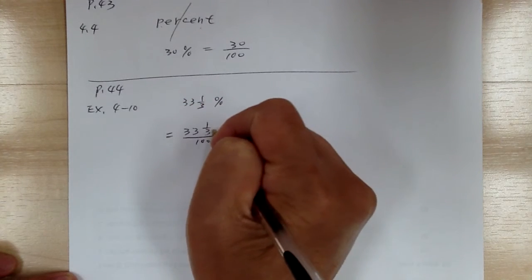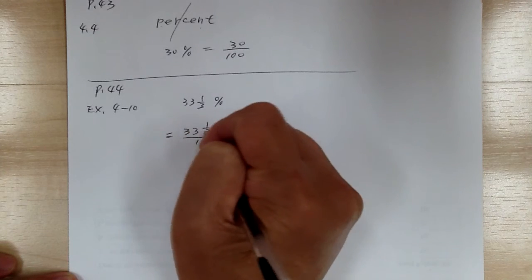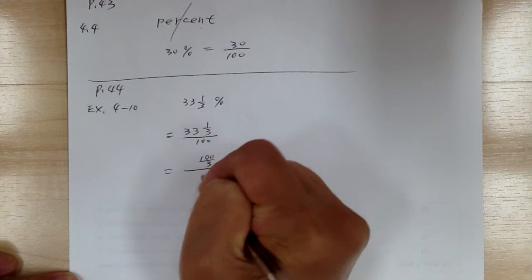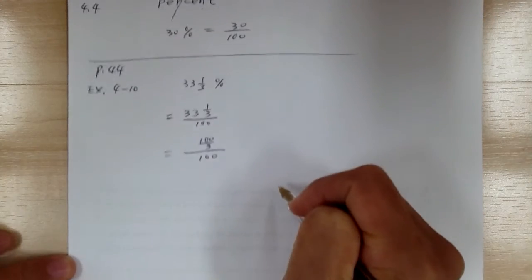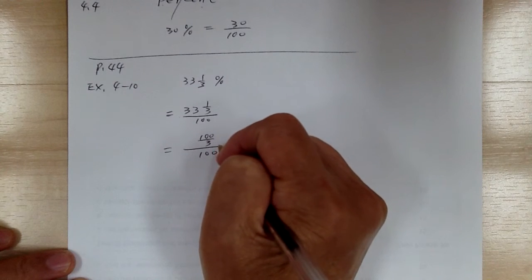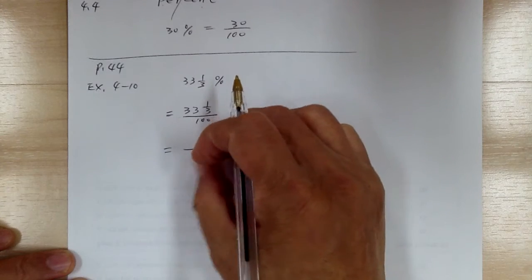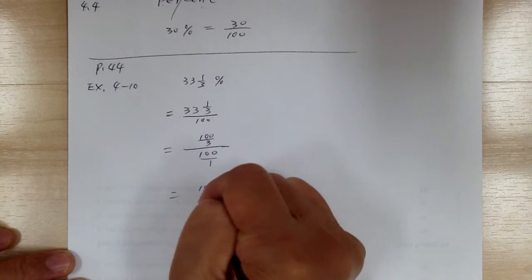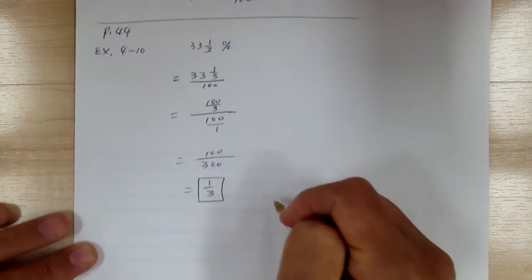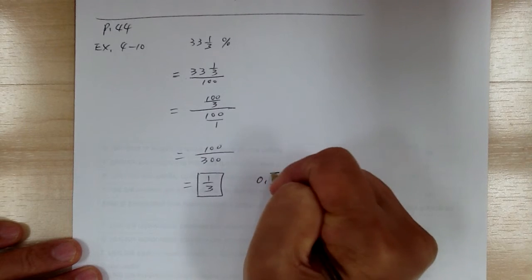So what you want to do is convert this into improper fraction. So this will be equal to 100 over 3 over 100. Now you have a complex number, so you can put this over 1 and you can use outer over inner. So this is equal to 100 over 300. So this is equal to one-third. And if you convert it into decimal, this is going to equal to 0.3 repeating.